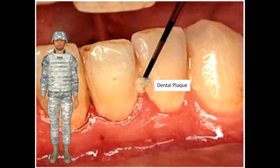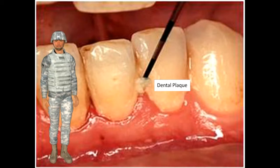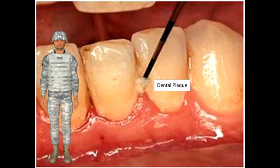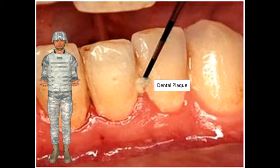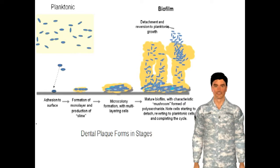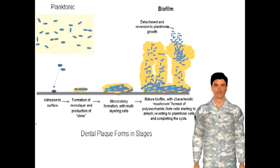Most tooth decay starts with dental plaque. Plaque is a film which continually develops on tooth surfaces. It is usually white, but it can also be clear. It is made up of many different kinds of bacteria, viruses, fungi, and protozoa. These microbes, along with salivary gland products and food particles, stick to the tooth surface. The microbes that make up dental plaque constantly change. Factors like saliva flow, diet, and the immune system all determine which ones survive in the mouth.